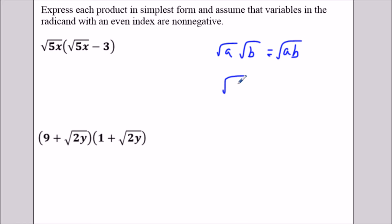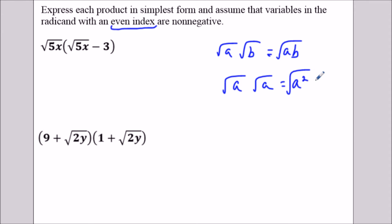Another thing: we're assuming that the variables under the even index are non-negative. But if I have something like the square root of a squared, that's equal to a. So matching square root radicals cancel out — that's another idea we're going to make use of.